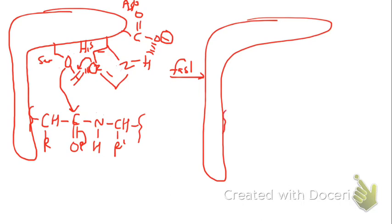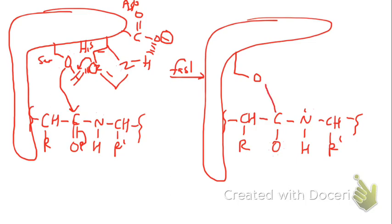What we have now is our peptide still bound to the enzyme. We have our serine that's bound to the peptide. We have this histidine which has been protonated and then we have the aspartic acid still hydrogen bonding.